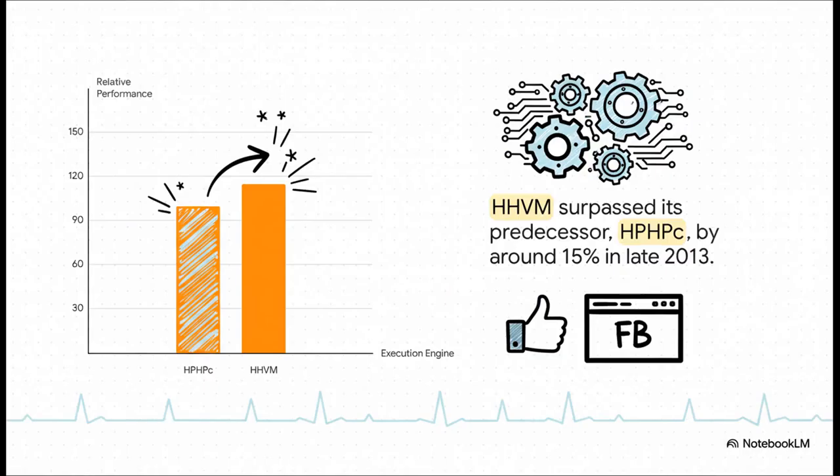And the results? They were absolutely fantastic. Not only did it fix that awful developer workflow from the old system, but it was also just plain faster. By the end of 2013, HHVM was already beating HPHPC by around 15%. That was it. Facebook made the call and switched the entire website over to its brand new, just-in-time engine.